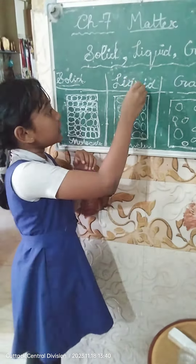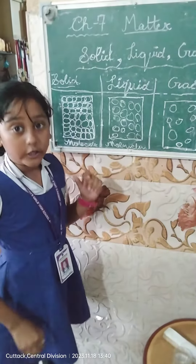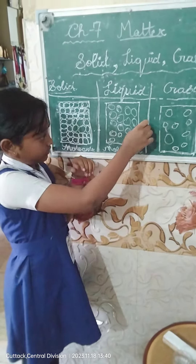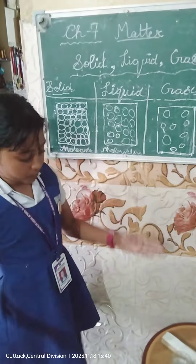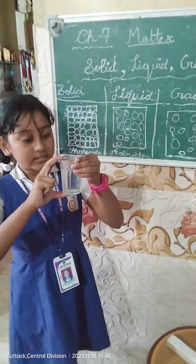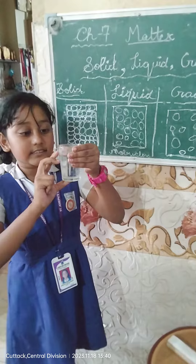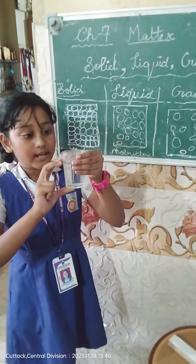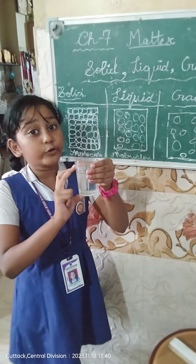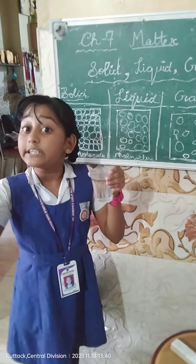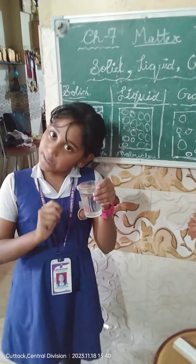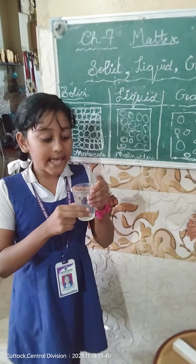Then liquid. Molecules in liquid are loosely packed, so it can flow. For example, this is a glass. Inside the glass it is water. Water has definite volume but does not have a definite shape. It can flow.